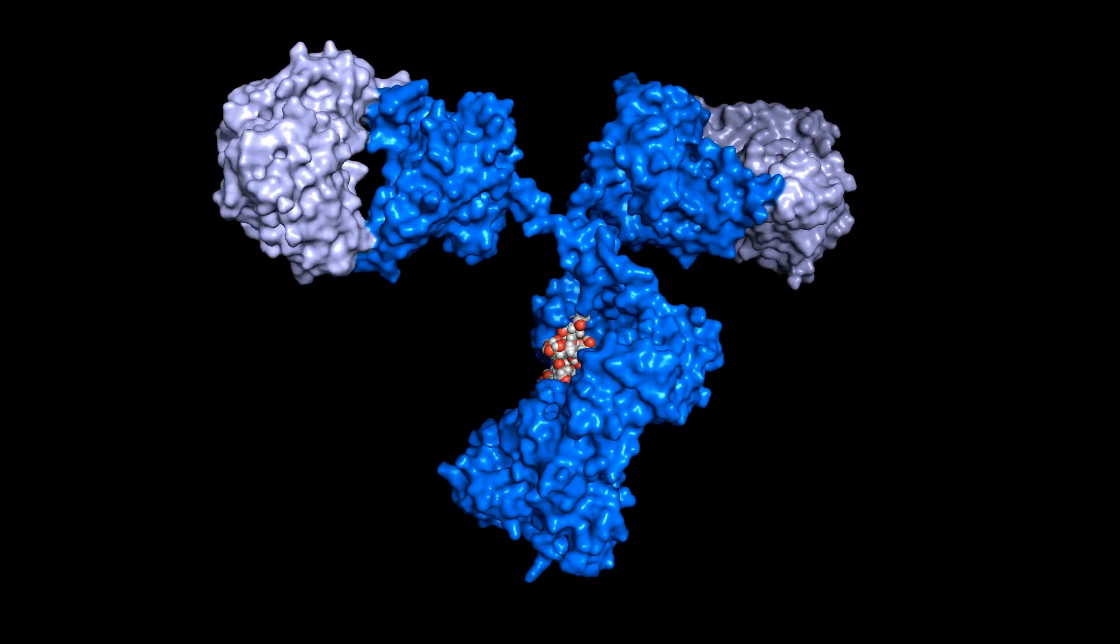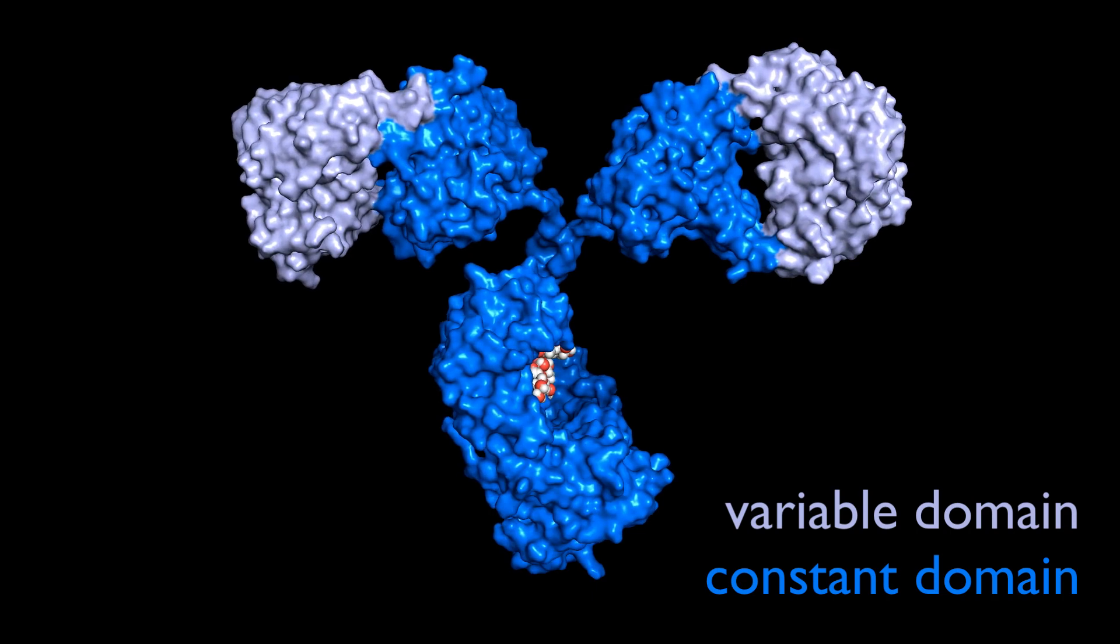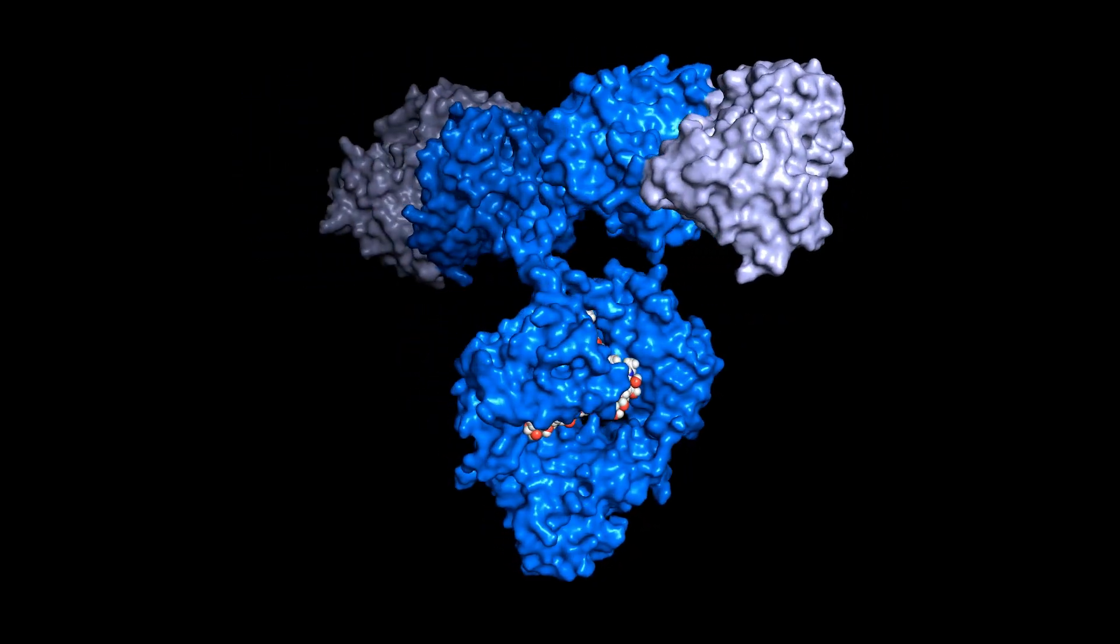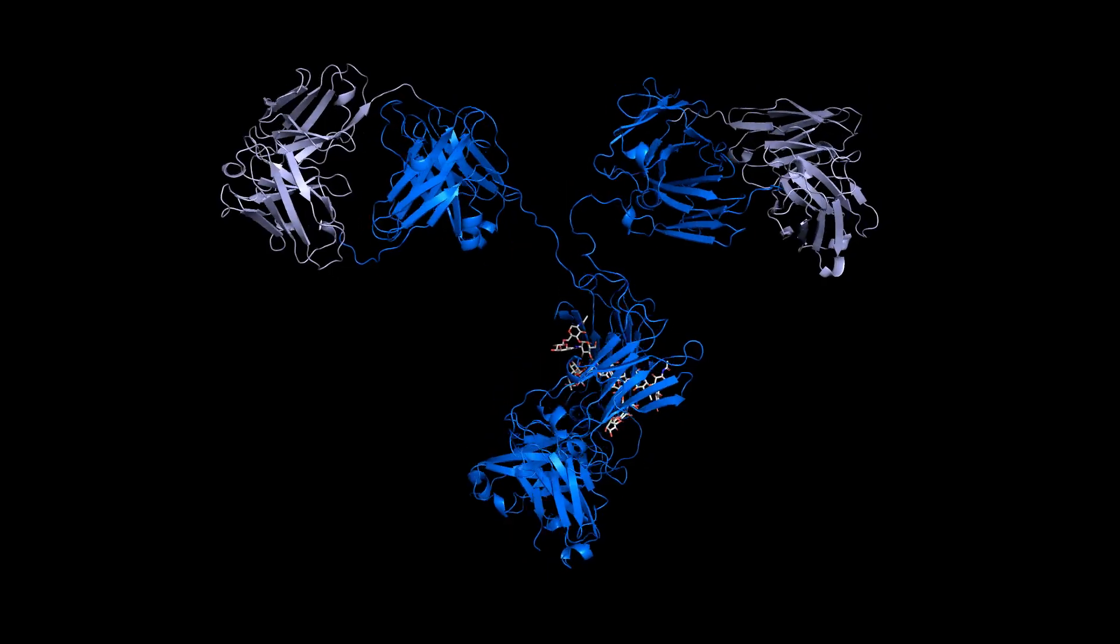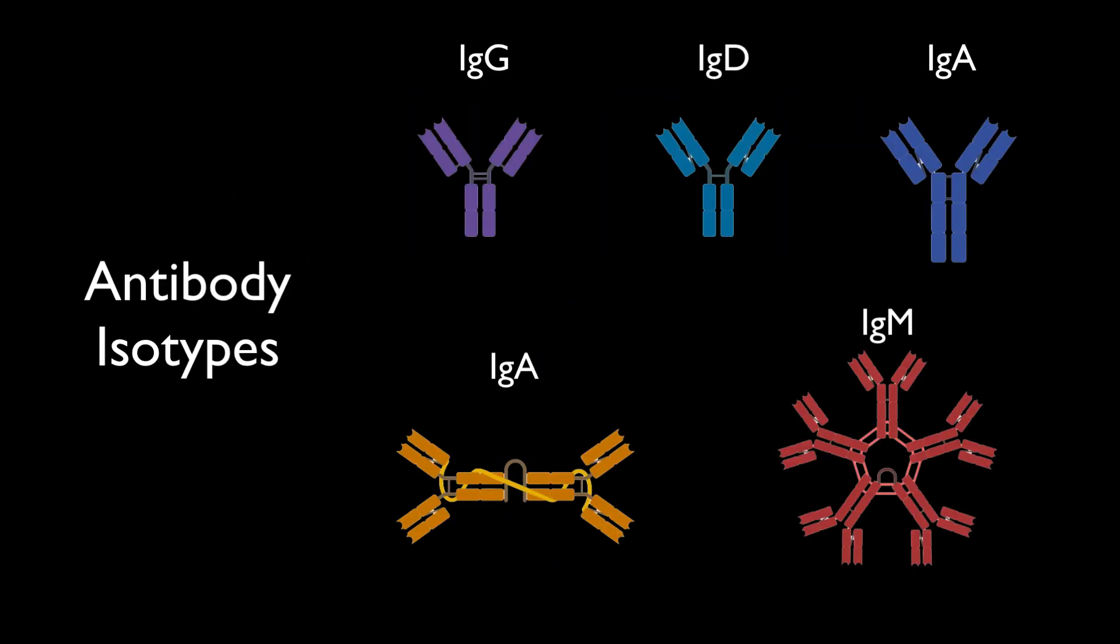These Y-shaped molecules bind antigens at the tips of two identical arms. The rest of the antibody is made up of constant domains. The repeated patterns of protein structure in the constant domains are conserved. That is, they're the same in antibodies of the same class. And there are five of these antibody classes, or isotypes.